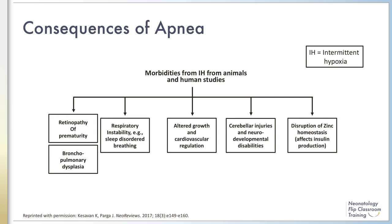It should be noted that gastroesophageal reflux is not on this list. The association between reflux and apnea is unclear, and studies to date do not definitively link them in a causal relationship, and pharmacotherapy for GERD has not been shown to be of benefit in preventing apnea. It is important to understand what types of consequences apnea of prematurity can lead to: the hypoxia, bradycardia, and perfusion changes associated with apnea of prematurity can damage maturing tissues and organs.